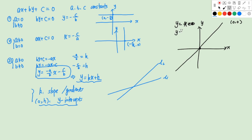If I draw another line, Y equals to X plus 1, it still has a gradient equal to 1. And its Y intercept will be (0, 1). And if I draw another line, Y equals to 2X plus 1, the line will be steeper because it has a greater gradient. Its Y intercept is still (0, 1). So this is Y equals to 2X plus 1.